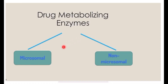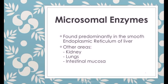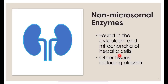There are two types of drug metabolizing enzymes: microsomal and non-microsomal. Microsomal enzymes are found in the endoplasmic reticulum of hepatocytes, as well as in the kidney, lungs, and intestinal mucosa. Non-microsomal enzymes are found in the cytoplasm and mitochondria of hepatic cells, and also include other tissues including plasma.